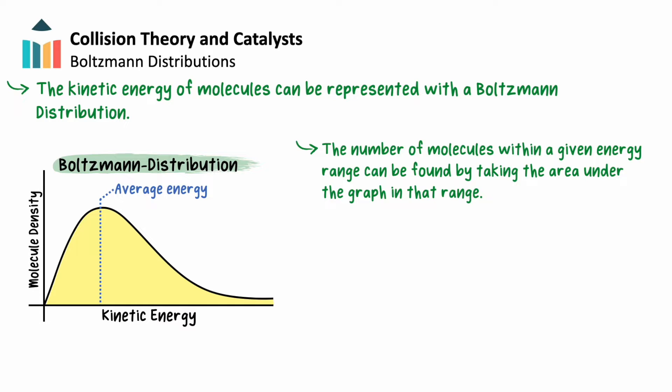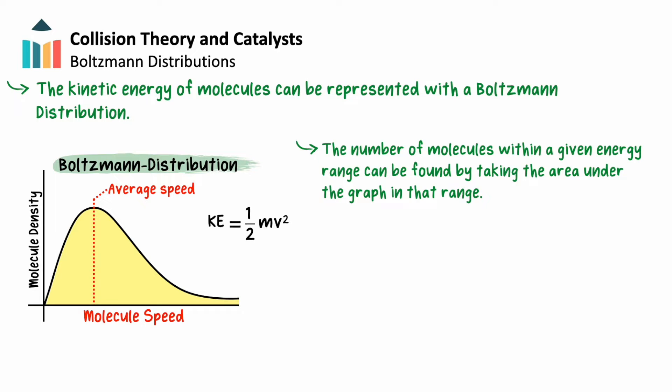Some Boltzmann distributions may be plotted slightly differently. The x-axis might be the speed of the molecules rather than their energy. This will make the distribution look more narrow, but the graph can be interpreted in the same way, keeping in mind the relationship between kinetic energy and speed: kinetic energy equals one half mass times speed squared.